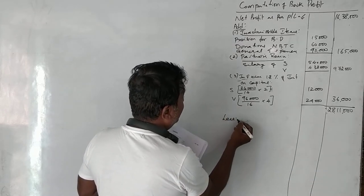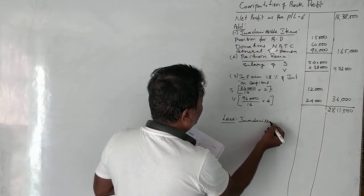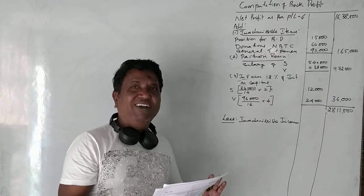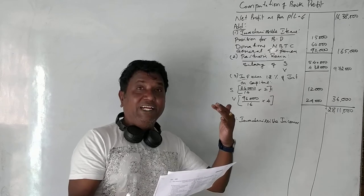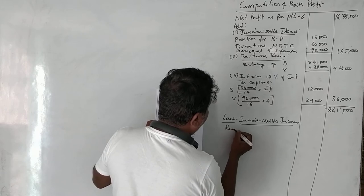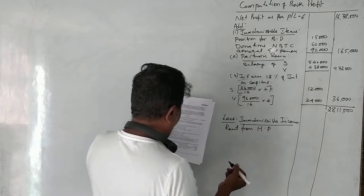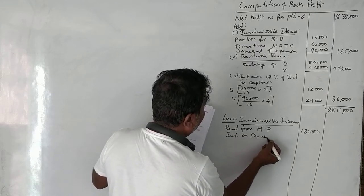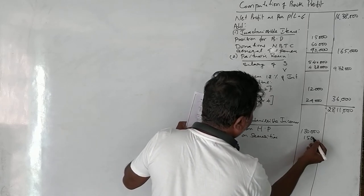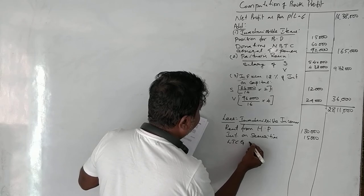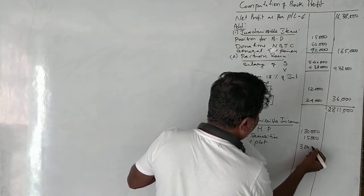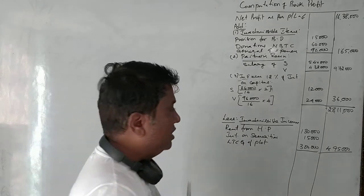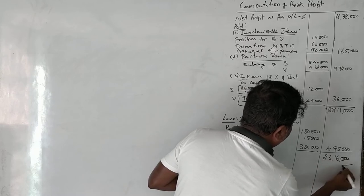Now we deduct inadmissible general incomes. Looking at the credit side of the P&L account, there are incomes not related to business — they belong to other heads of income. These are: rent from house property ₹1,80,000, interest on securities ₹15,000, and LTCG on plot ₹3,00,000. Totally ₹4,95,000 is the inadmissible income included in net profit. Deducting this, we get ₹23,16,000 as the book profit.